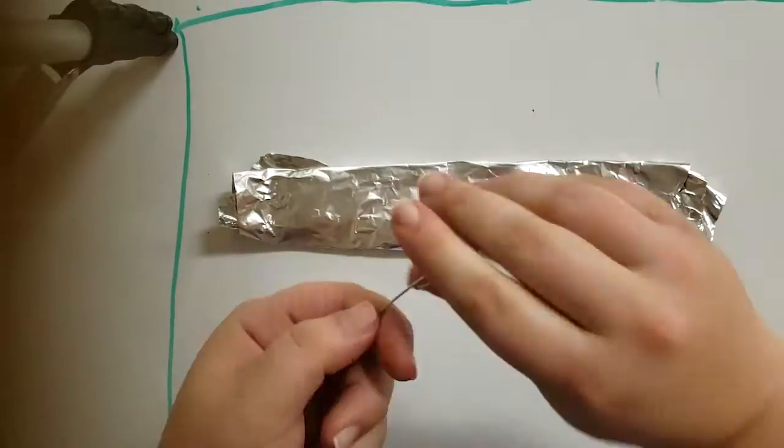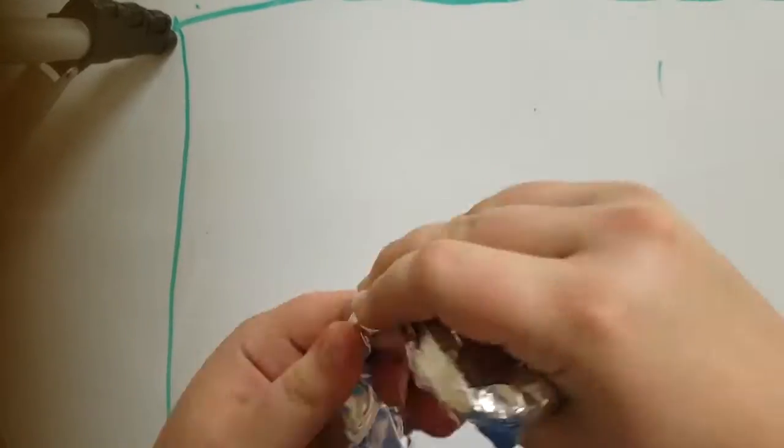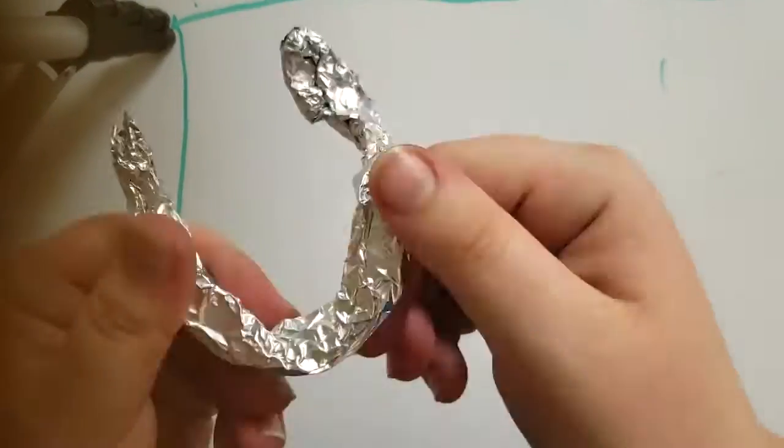Next, pull out a sheet of aluminum big enough to cover the skeleton and be filler. This should be enough so that you're not wasting clay as a filler.